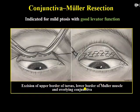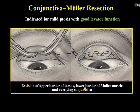Now, how will you manage ptosis? The treatment depends on: finding the cause, the severity of ptosis, and the levator function. Surgical types include: first, conjunctival Müller's muscle resection, which is indicated for ptosis with good levator function, where part of the tarsus and the lower border of Müller's muscle is excised.